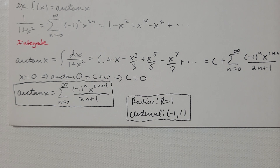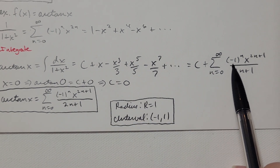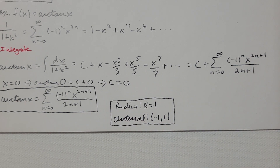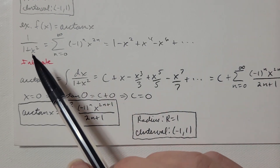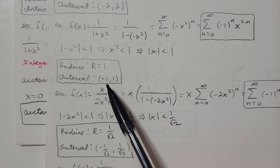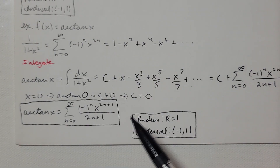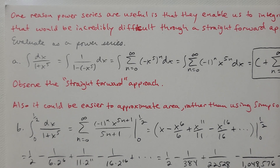So the power series representation for arctan(x) is the summation as n=0 to infinity of (-1)ⁿ · x^(2n+1) / (2n+1). This is an important series you'll see again in the next section. The radius is 1 and the interval is (-1, 1) — same as the original series for 1/(1+x²).